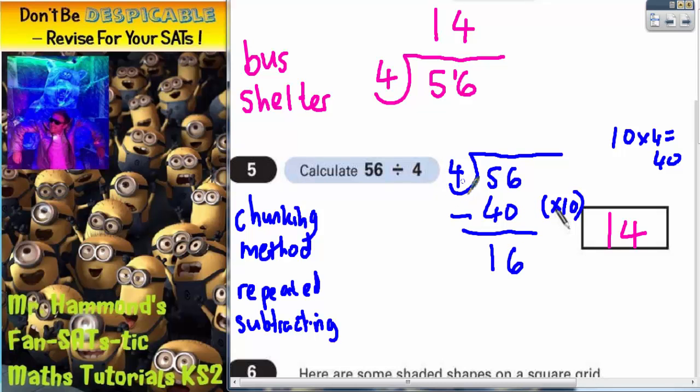So what chunk of 4s can we subtract from 16? Well if you know your 4 times table it goes 4, 8, 12, 16. So that's 4 4s. So write at the side what chunk of 4s you're subtracting. Well 4 4s are 16.